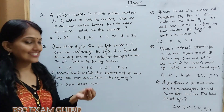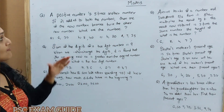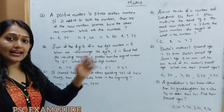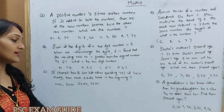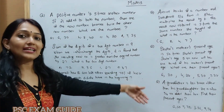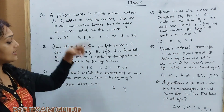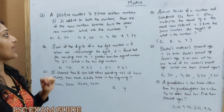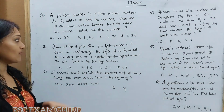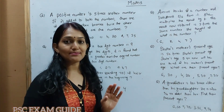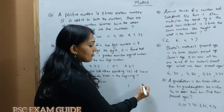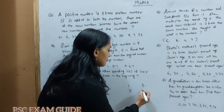I'm going to translate this. One positive number is 5 times the other number. Let one number be x and the other be y. If 21 is added to both numbers, one of the new numbers becomes twice the other. Every positive number is 5 times the other number, so we let the number be 5x.